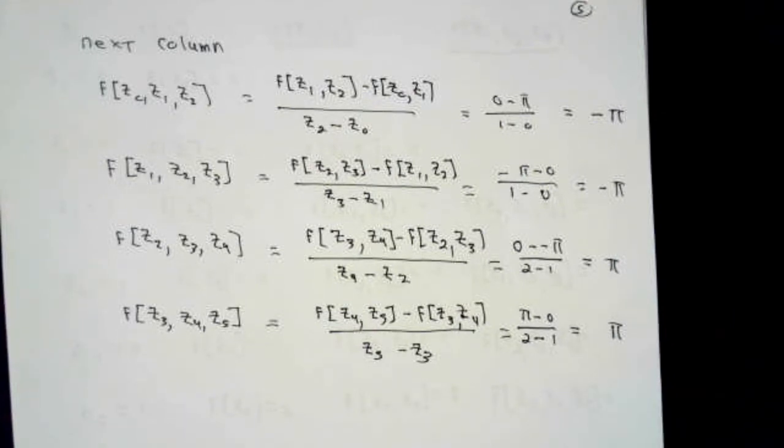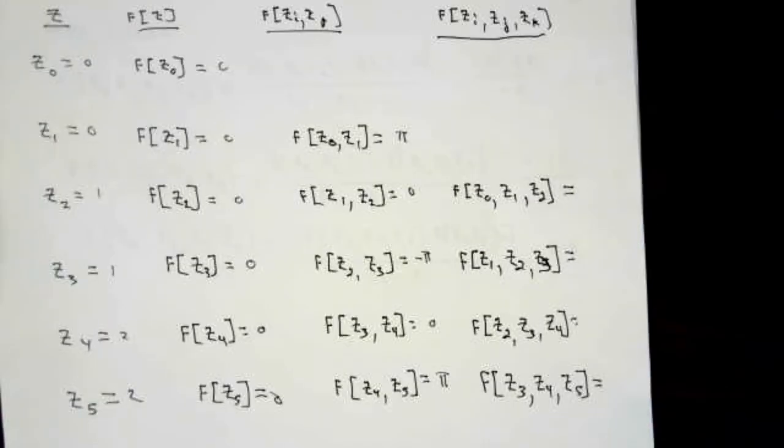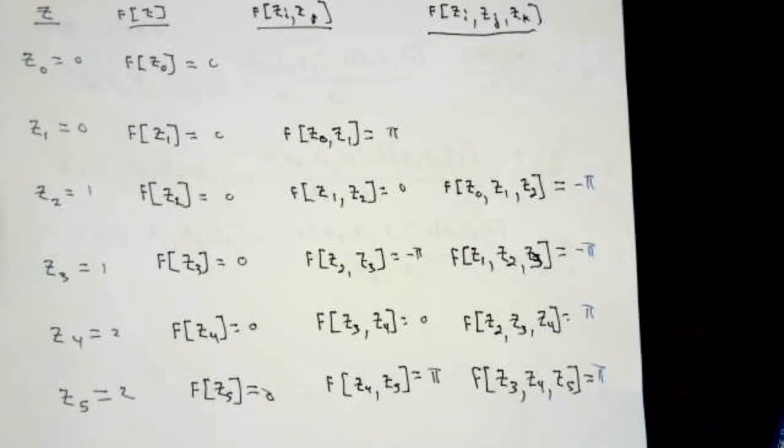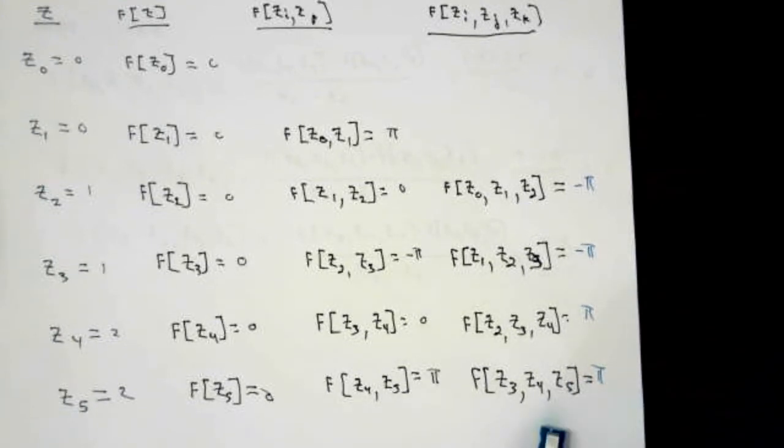So in my big table that I'm building up, these will be the numbers that go in the next column. So the information I have available to me at the moment now looks like this. This is column k equals 0. This is column k equal 1. I've got to figure out what column number k equals 2 is.